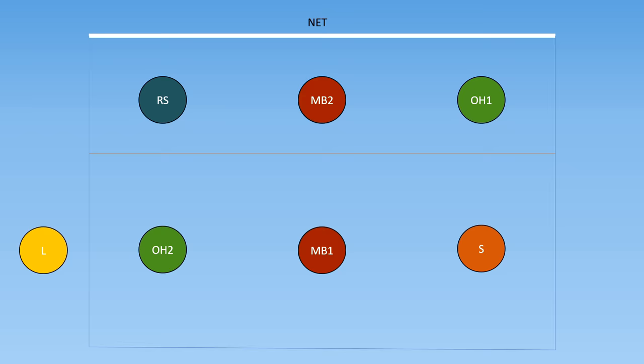The 5 in the 5-1 stands for the fact that there are 5 hitters on the court, and the 1 stands for the single setter who will rotate all the way around. On the screen I have depicted the different positions that are available, including the right-sided hitter who is opposite of the setter, the two middle blockers who are opposite of each other, and the two outside hitters who are opposite of each other. And we also have the setter right here.